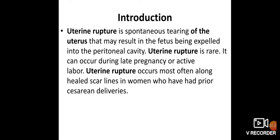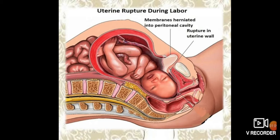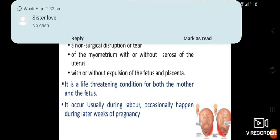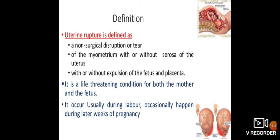Uterine rupture is defined as a non-surgical disruption or tear in the myometrium of the uterus — without surgery being performed. It is a tear of the myometrium with or without expulsion of the fetus and placenta. It is a life-threatening condition for both the mother and the fetus.